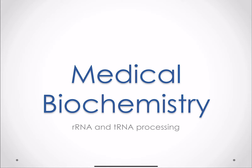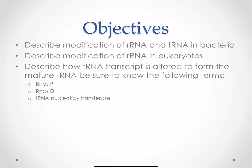Here we're going to discuss our ribosomal RNA and our transfer RNA processing. We're going to discuss the modifications of both of these in bacteria and in eukaryotes, and then we're going to discuss your transfer RNA transcripts and how they become mature transfer RNA. We're going to talk about RNase P, RNase D, as well as our nucleotidyl transferase.